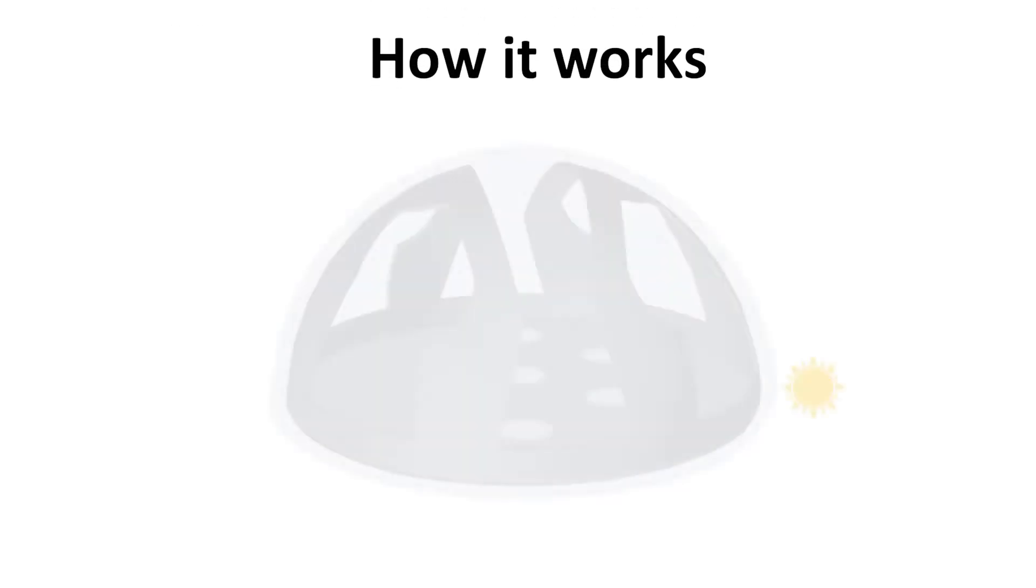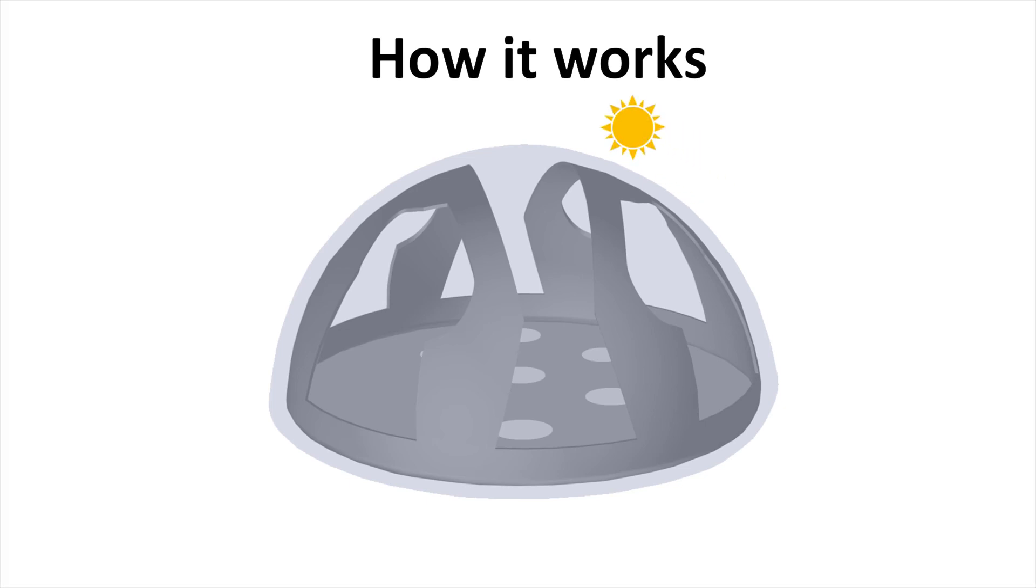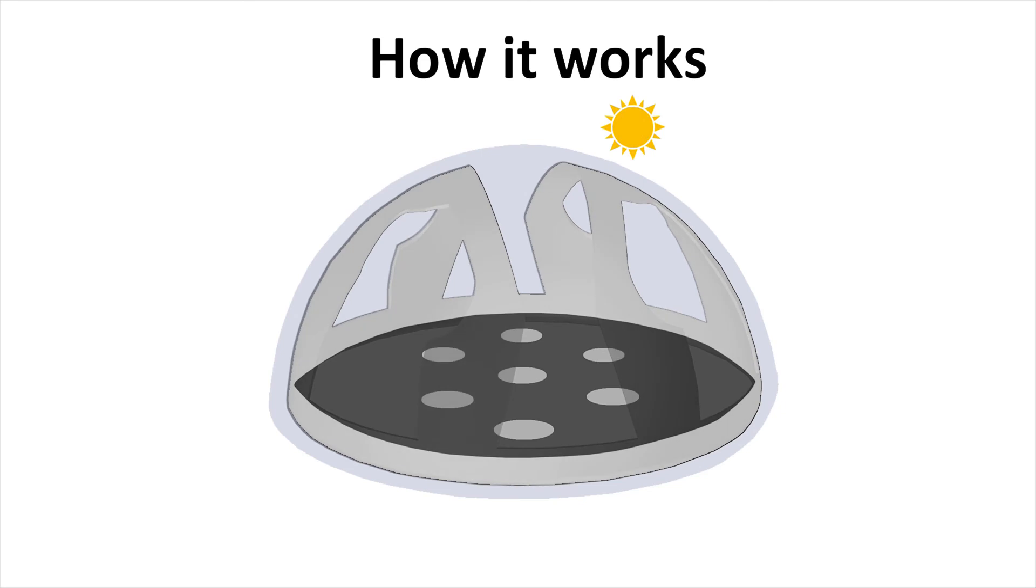How does it work? The position of these seven thermopiles, in combination with the shape of the shadow mask, ensures that one thermopile is always in the direct solar beam.